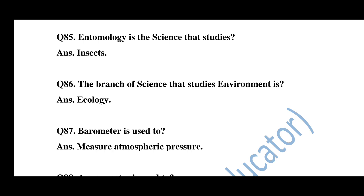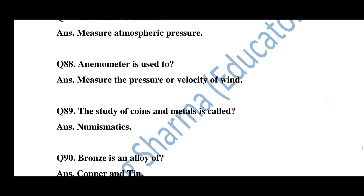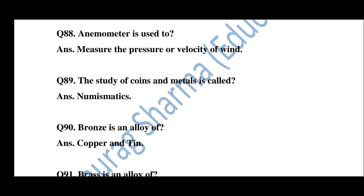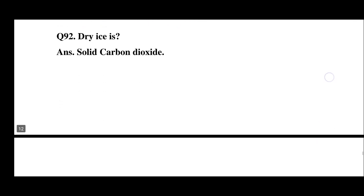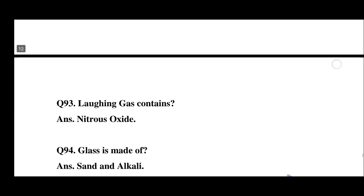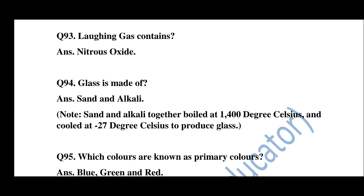Question number 87: Barometer is used to measure atmospheric pressure. Question number 88: Anemometer is used to measure the pressure or velocity of wind. Question number 89: The study of coins and metals is called numismatics. Question number 90: Bronze is an alloy of copper and tin; brass is an alloy of copper and zinc. Question number 92: Dry ice is solid carbon dioxide.